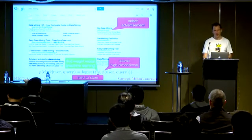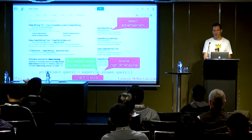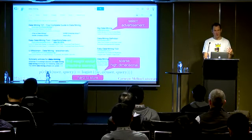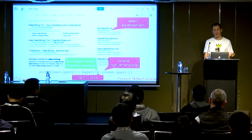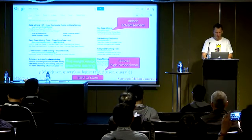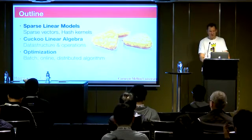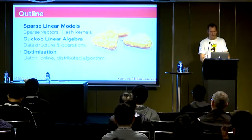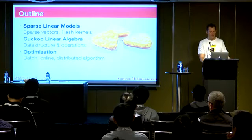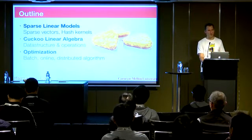This talk is all about how we can deal with very sparse high-dimensional vectors efficiently, and how we can get away with storing models that are actually too large to be stored. We'll start with something fairly basic and look at sparse linear models and hash kernels.